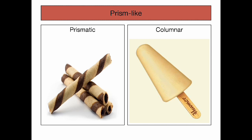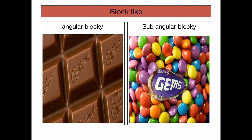The next most important soil structure is prism-like structure. Here, the vertical axis is more developed than the horizontal axis, giving a pillar-like shape. They are common in arid and semi-arid regions. There are two kinds: when the top is rounded, the structure is columnar; if the top is flat, it is prismatic. The best example for prismatic structure is a chalk stick, since its surface is flat. In the case of columnar, it is kulfi, since the surface of the kulfi is more or less rounded.